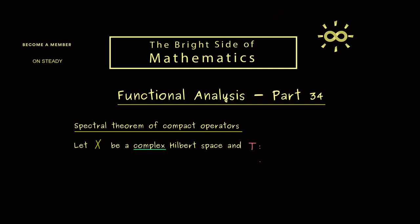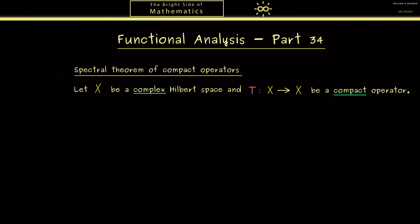And then of course what we then need is a compact operator T defined on this Hilbert space X. So please recall from the last video what the definition of a compact operator is and what we know about the spectrum of such operators. Okay, but now in addition we also want that T is a self-adjoint or normal operator. Now if you don't know the definition anymore, please check out part 32. But maybe as a short recap, self-adjoint means that T star is equal to T, and normal means that T star and T commute. In other words, T star T is the same as T T star.